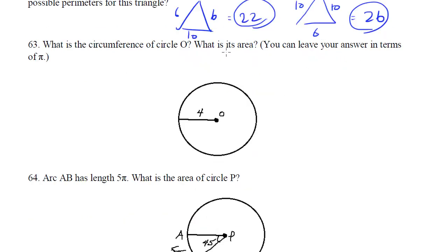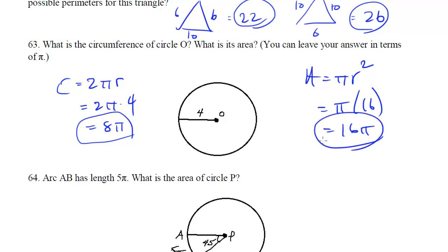What is the circumference of circle O? What is its area? So we know its radius is 4, so we want to know the circumference. Circumference is 2πr, which in this case is 2π times 4, which is 8π. Generally for the SAT and for this test, just leave it in terms of π, no reason to multiply it out.